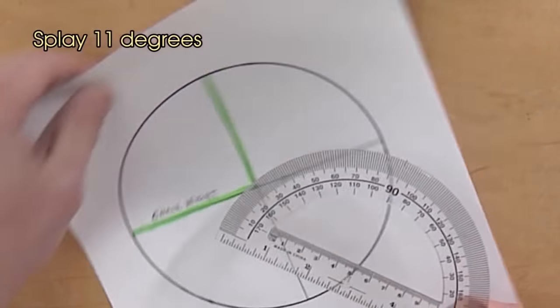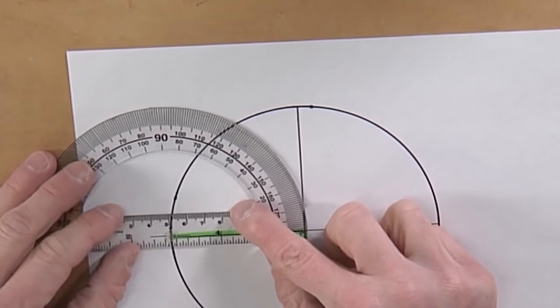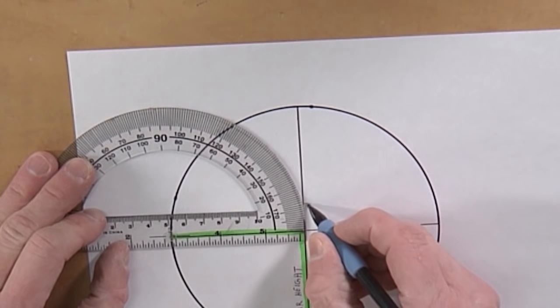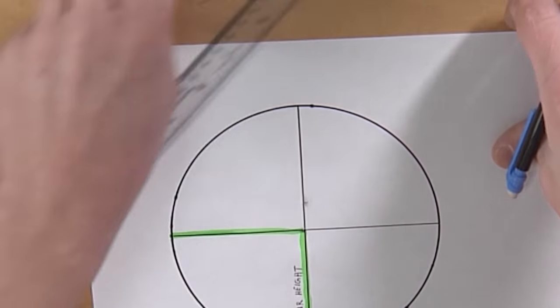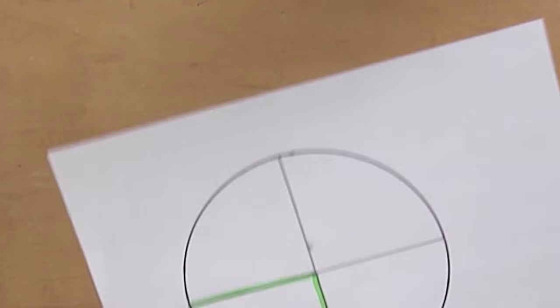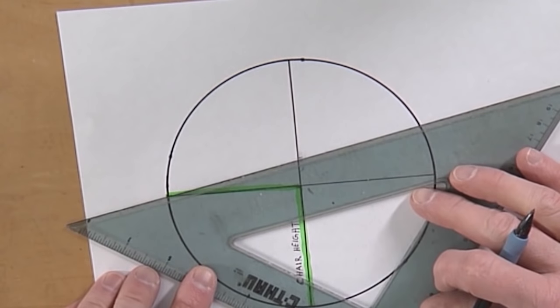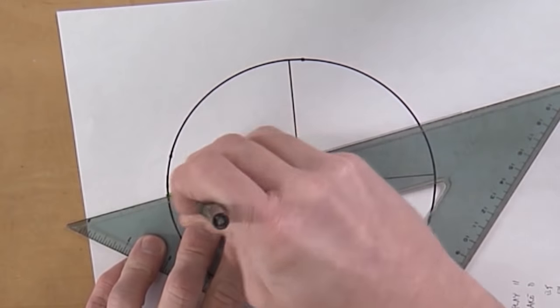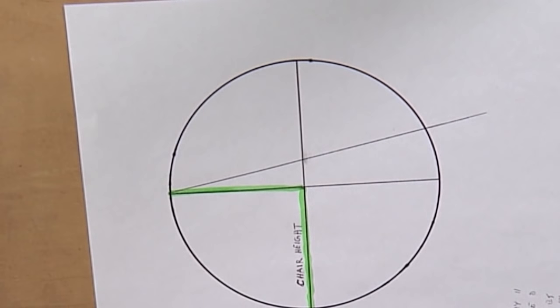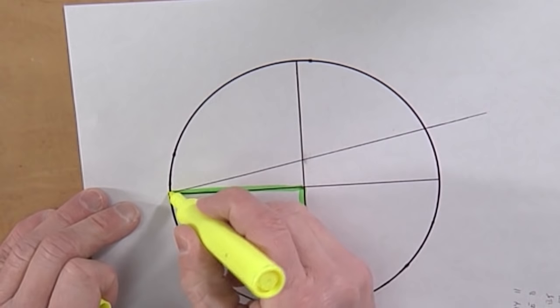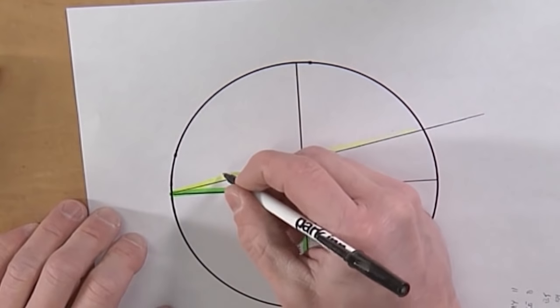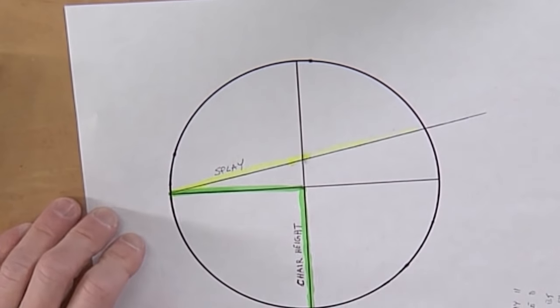So I'm going to take this protractor and place it on there and go up to 11 degrees. And I'm going to draw a line all the way through that. And to help keep this clear, I'm going to color code this. So let's make the splay yellow.